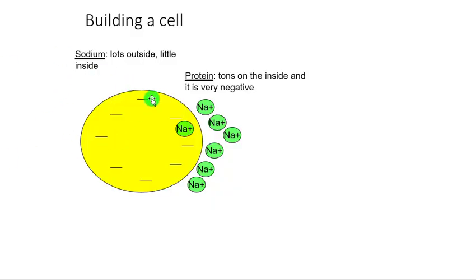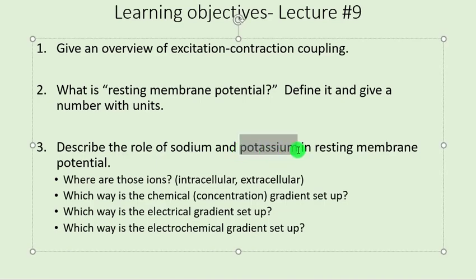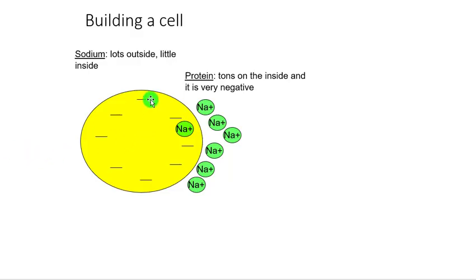What I've indicated here in yellow is the cell. The two players that we really care about are sodium and potassium. But there's another player set up in the background — these little hash marks representing protein. These are negatively charged proteins on the inside of the cell. How negative are they? We don't have a number for them, but we're going to say they're really, really negative. There are tons of negatively charged proteins on the inside of the cell.